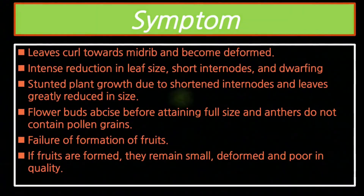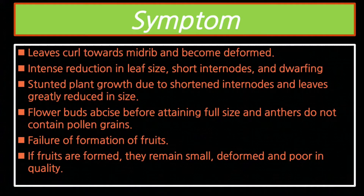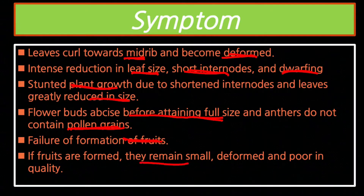Now let's look at the symptoms. There is stunted plant growth due to shortened internodes, and leaves are greatly reduced in size. Flower buds fall before attaining full size and anthers do not contain pollen grains — failure of formation of fruits.